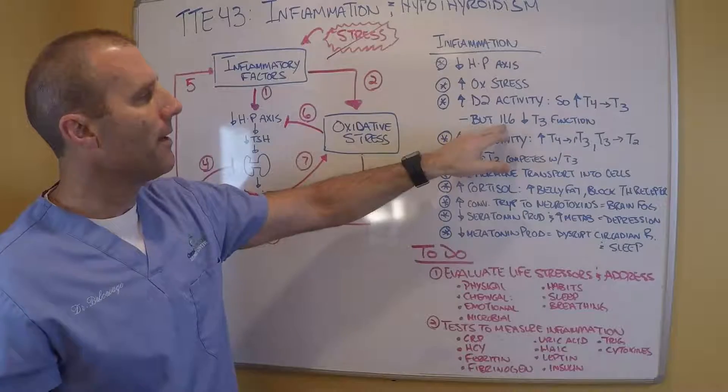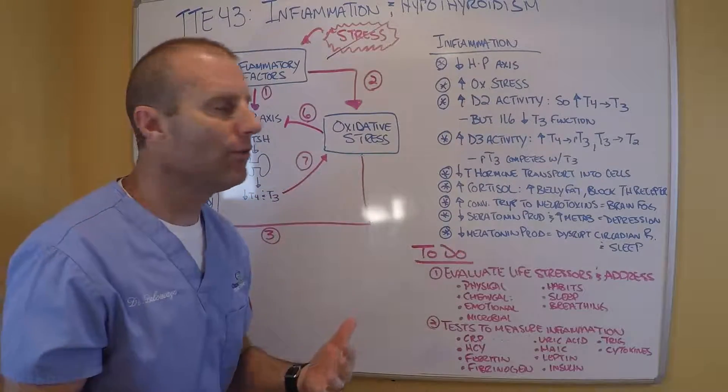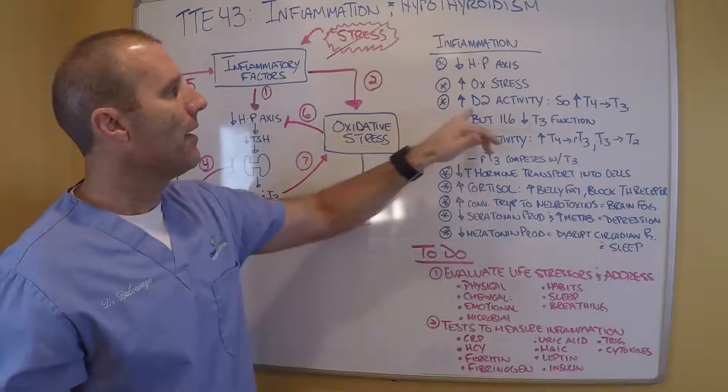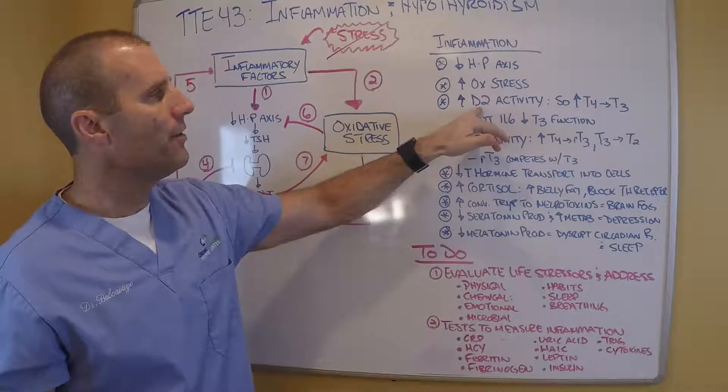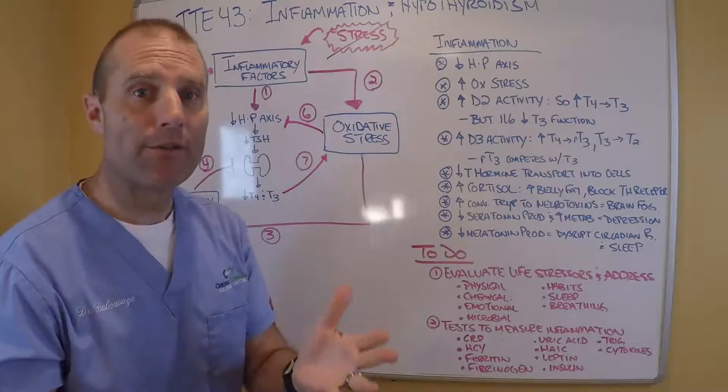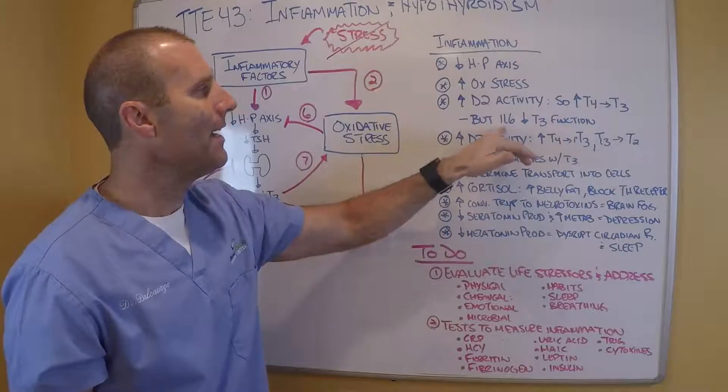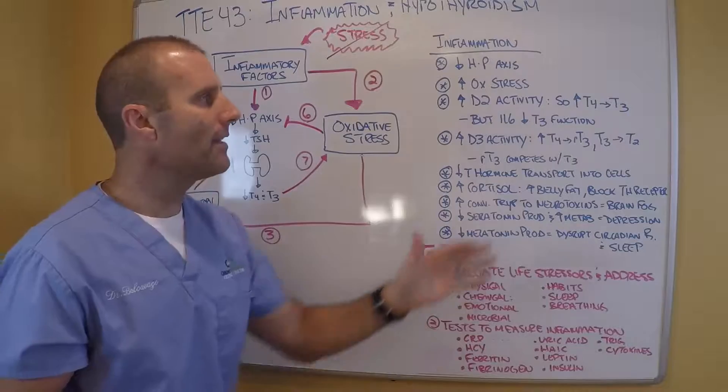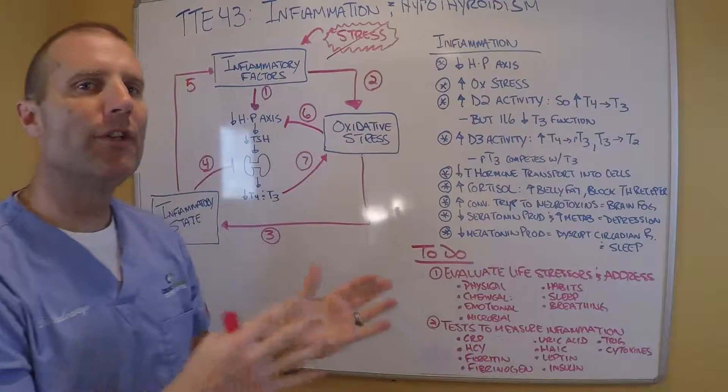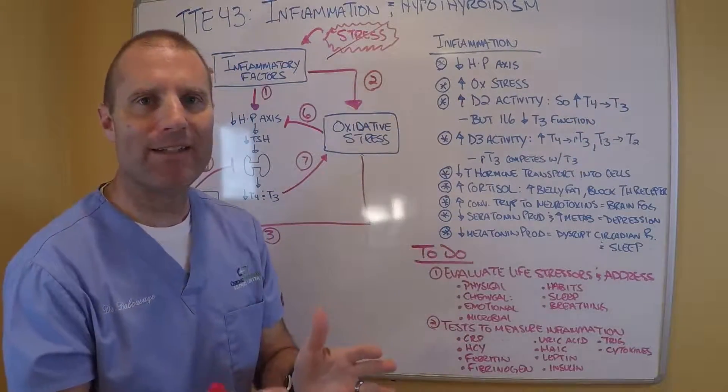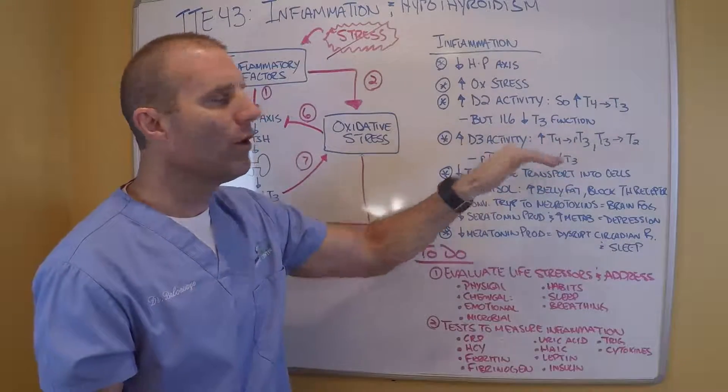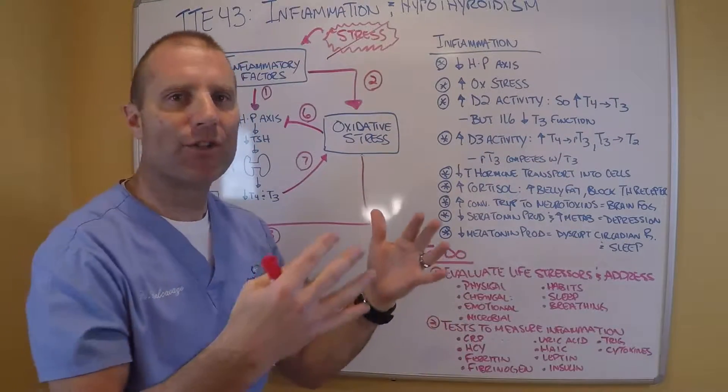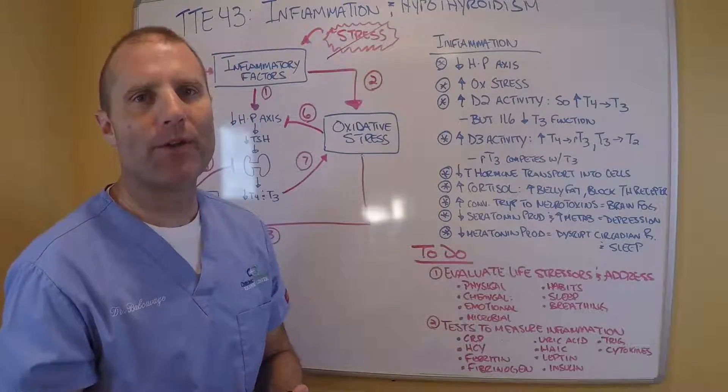One of these inflammatory chemicals is IL-6, interleukin-6. And the inflammatory chemicals will increase deiodinase 2 activity, leaving you with more T3, which is great. But IL-6 will inhibit T3 function, so it doesn't allow it to work. So yes, initially, you'll convert the T4 that's in the cells into T3. But if it can't work, if it can't bind to the receptors and actually work, then you're still going to have hypothyroid symptoms.